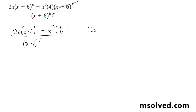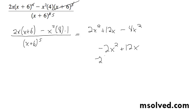So we get 2x squared plus 12x minus 4x squared. This reduces down to negative 2x squared plus 12x, and we can pull out a negative 2. So I'll pull out that negative 2, and I'll end up with x plus 6 — that's negative 2x — over x plus 6 raised to the 5th. This cancels, coming down to the 4th.